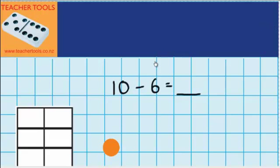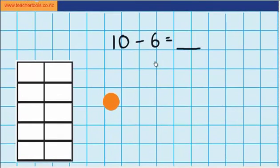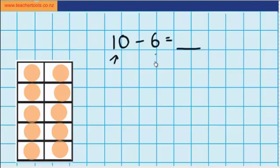So if we go down to our 10s frame here, you can see the first thing I'm going to need to do is fill this 10s frame with counters, so that I have 10. And now you can see that I need to take away 6.